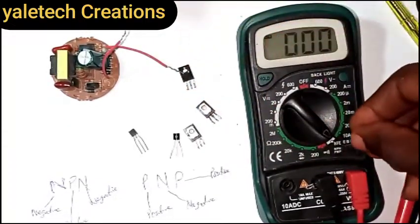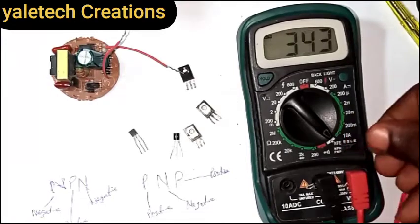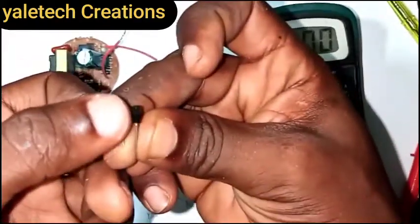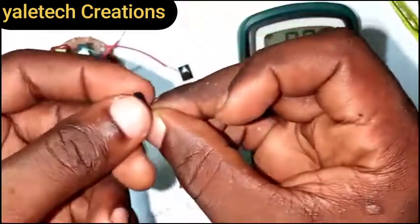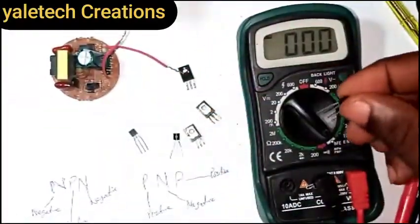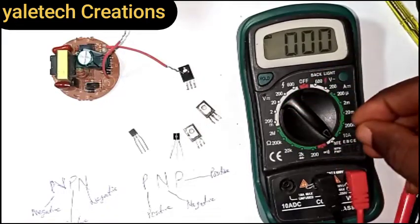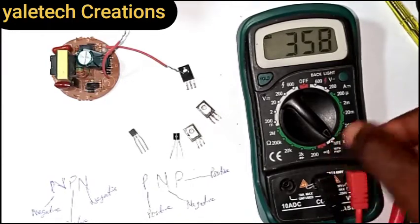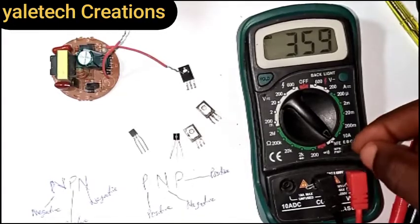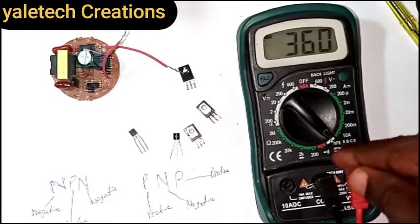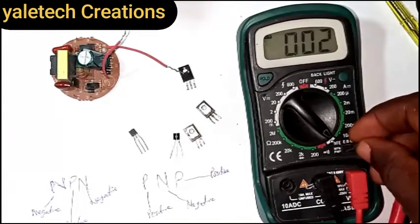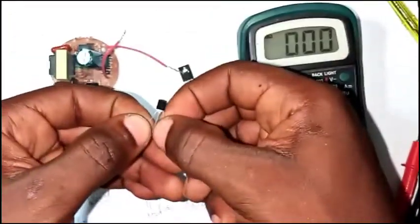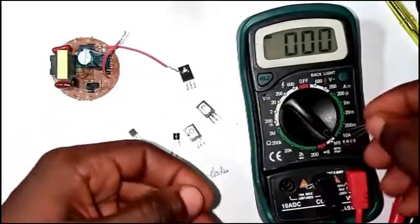Let me state something very clear: when you look at your transistor, one side is flat and one side is curved. The flat side should be facing you when you place it in the HFE socket. So the flat side is facing me now. I'll put it in gently — and you can see the reading. It reads under NPN, which means it is Negative Positive Negative. If I put it in the PNP slot, it's not reading.